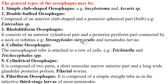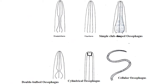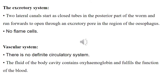Stichocyte oesophagus: the oesophageal tube is attached to a row of cells, as in Trichinella and Trichuris species. Cylindrical oesophagus: composed of two parts — a short muscular narrow anterior part and a long wide glandular posterior portion, as in filarial worms. Filariform oesophagus: composed of a simple straight tube, as in the infective third-stage larvae of most nematodes. The excretory system is composed of two lateral canals in the posterior part of the worm, running forwards to open through an excretory pore in the region of the oesophagus. No flame cells.